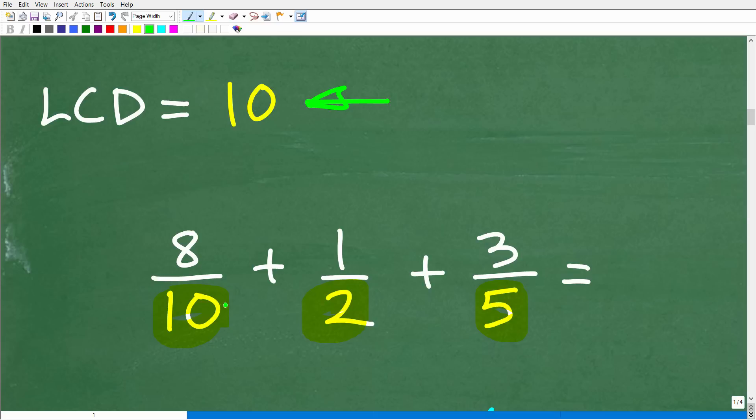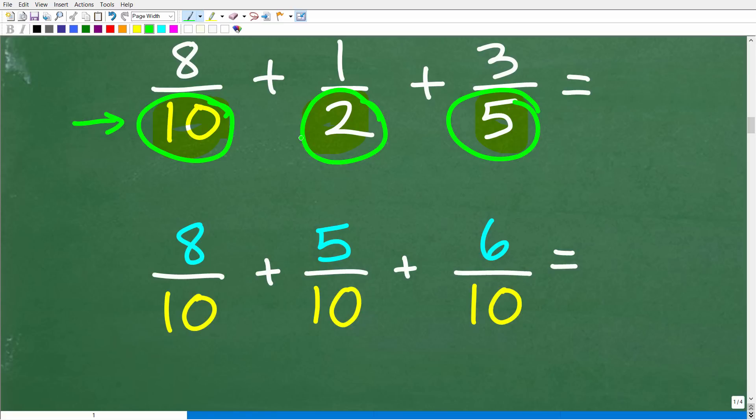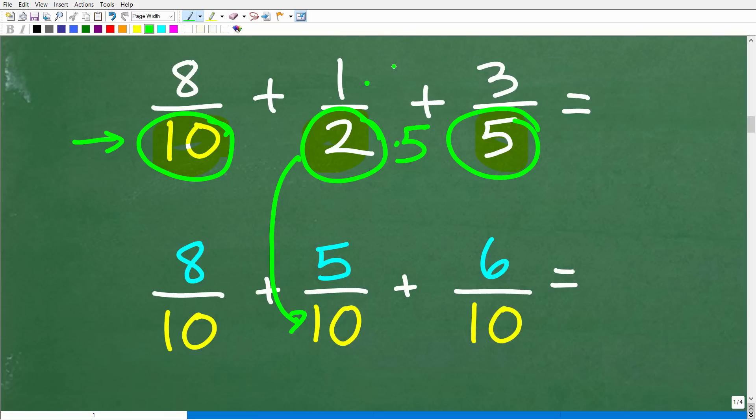Our first fraction, 8 over 10, we already have the LCD, so that is already good to go. But we have to rewrite 1 half and 3 fifths such that the denominators are 10. To change a 2 into a 10, we multiply it by 5. We also have to multiply the numerator by 5. 1 times 5 is 5, 2 times 5 is 10. So the fraction 5 tenths is equivalent to the fraction 1 half.